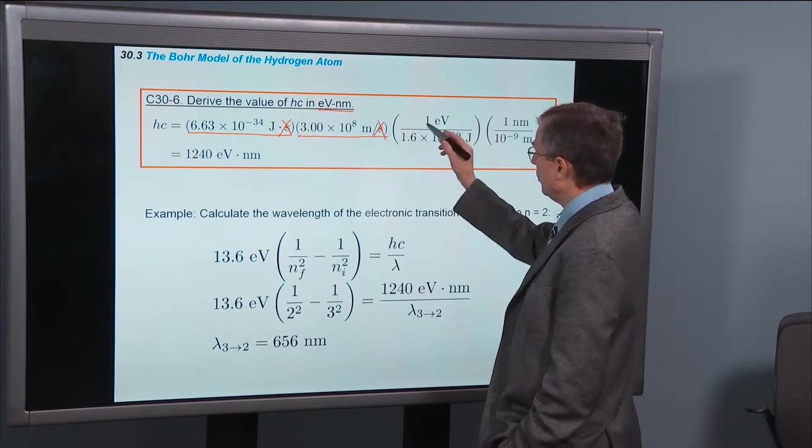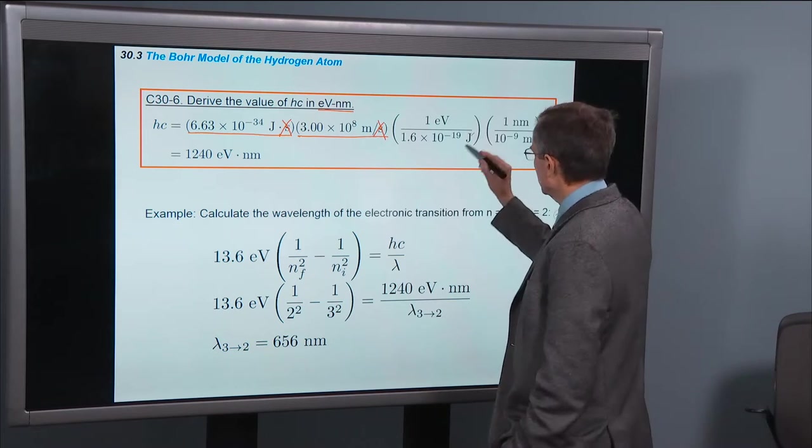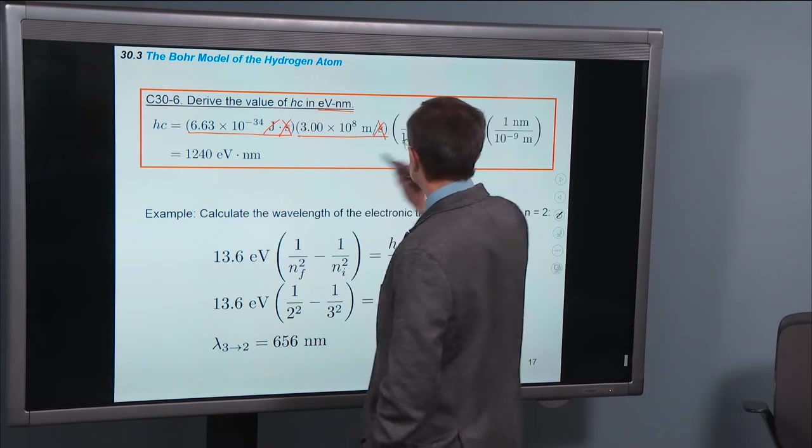No big deal. We know that 1 eV is 1.6 times 10 to the minus 19 joules. So that'll cancel the joules and convert them to eV.